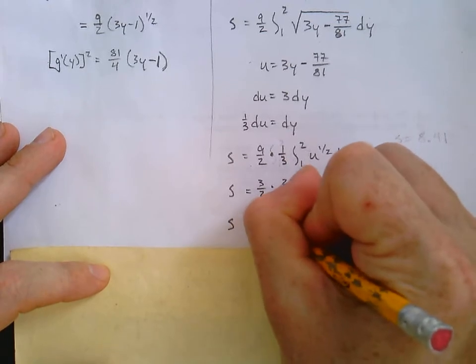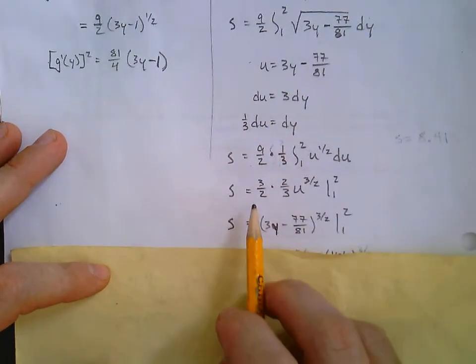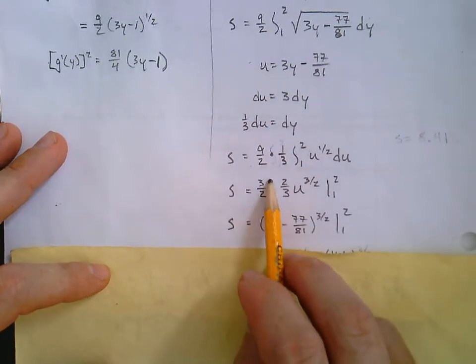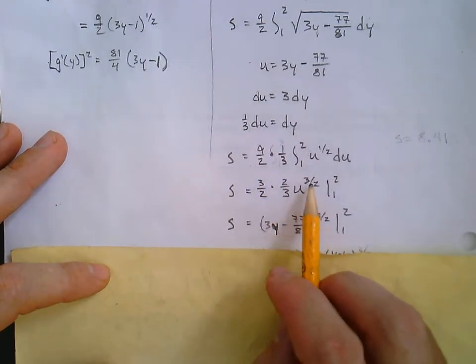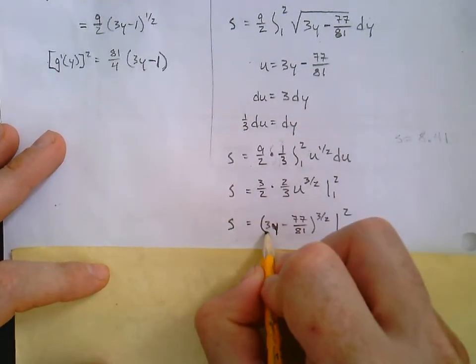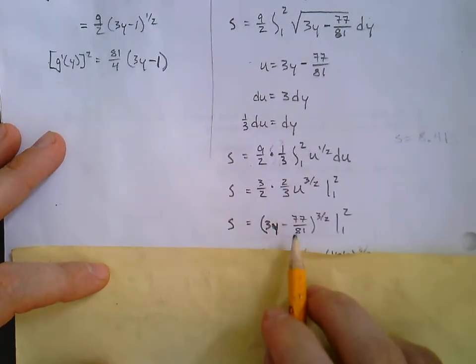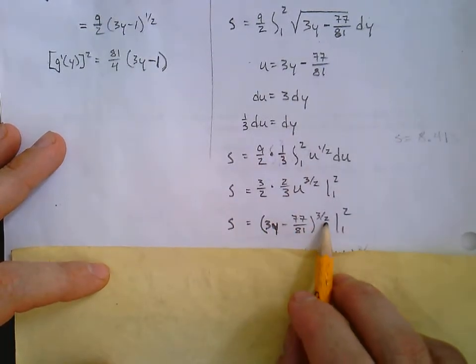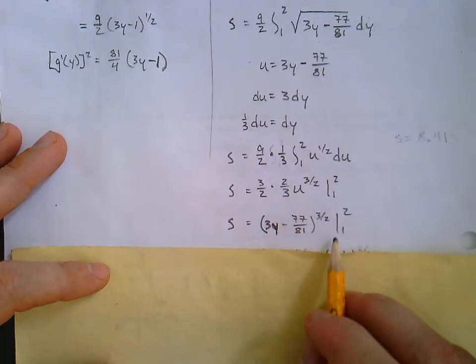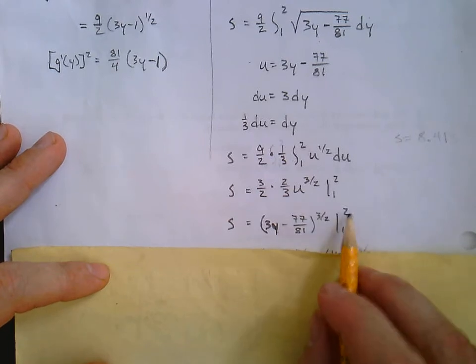And so this one kind of falls together nicely, right? Because the 3 halves and the 2 thirds, that all just cancels out. And it's simply u to the 3 halves. So, we've got 3y minus 77 over 81 to the 3 halves. And we're going to now evaluate from 1 to 2.